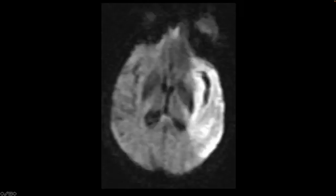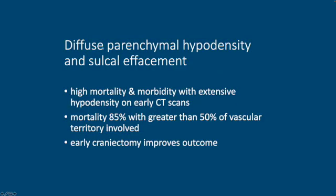And then here's a diffusion-weighted sequence from an MRI that shows the restricted diffusion, the cytotoxic edema within that MCA territory on the left. This last sign — diffuse parenchymal hypodensity and sulcal effacement — is generally associated with higher mortality and morbidity with extensive hypodensity seen early on CT scan. These are patients that often neurosurgery has to become involved to provide decompression to prevent herniation.